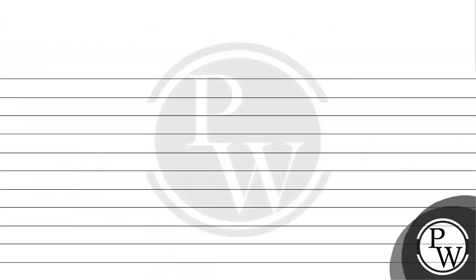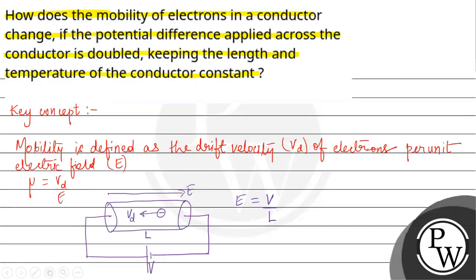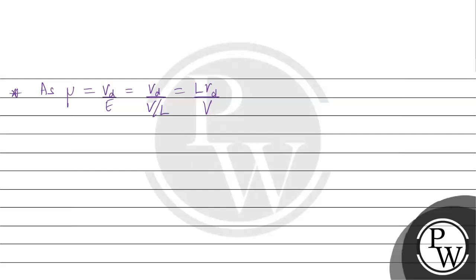Now, the formula for mobility mu is Vd upon E. Since E equals V upon L, this becomes mu equals Vd L upon V, keeping the length and temperature of the conductor constant.